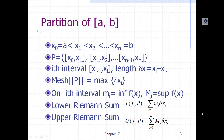First of all, given a partition on an interval you can find the length of each sub-interval delta x_i for each interval of the partition, and then we can also find the supremum capital M_i of the function on each interval. We multiply the supremum M_i and delta x_i, then sum over all i to get the upper Riemann sum.